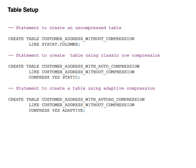Here is the syntax for the create table statement showing how the table is created with adaptive compression enabled. To enable adaptive compression, you include the keywords COMPRESS YES ADAPTIVE in the create table statement. Note that in DB2 version 10.1, adaptive compression is now the default type of compression, so when you specify COMPRESS YES without specifying ADAPTIVE, adaptive compression is assumed to be the type of compression you want to use.